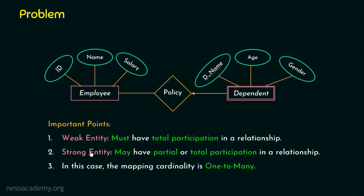Points one and two are very important. Point number three is scenario-based: in this scenario, the mapping cardinality is one-to-many. Employee one has two dependents, employee two has three dependents, and employee three has no dependents — so one employee may have multiple dependents. This point does not directly help solve the problem, but it is essential to understand.